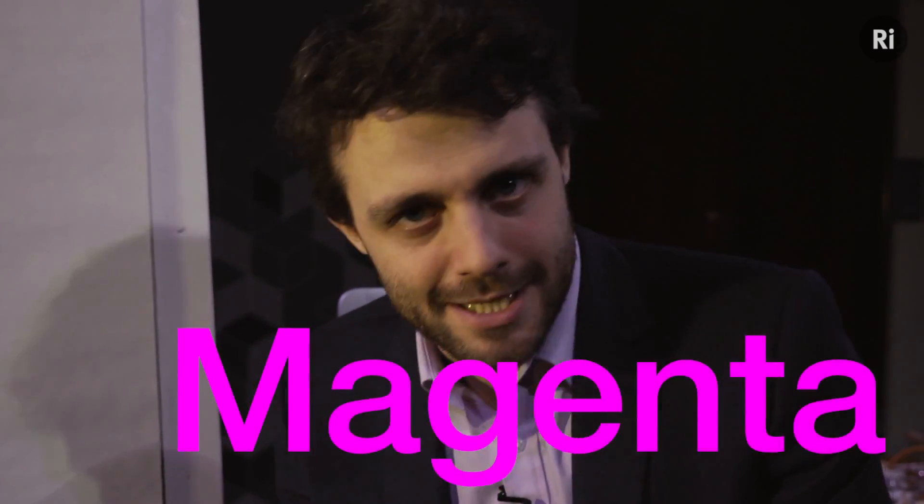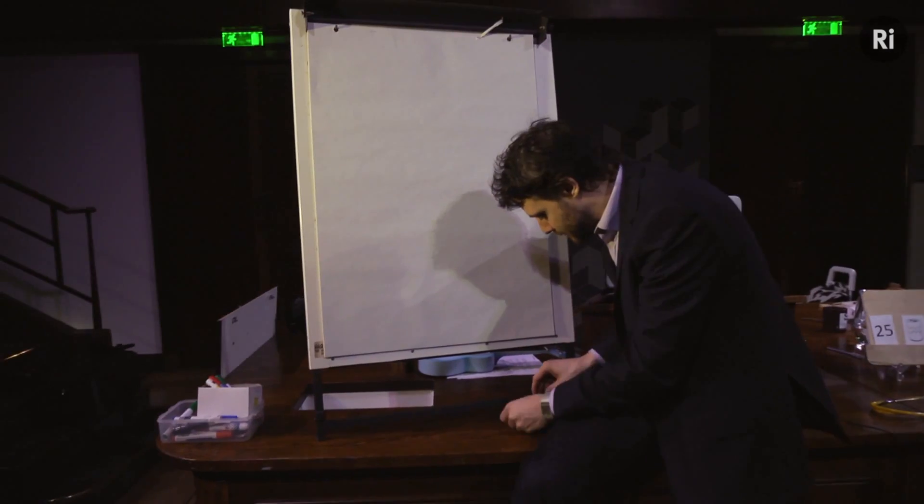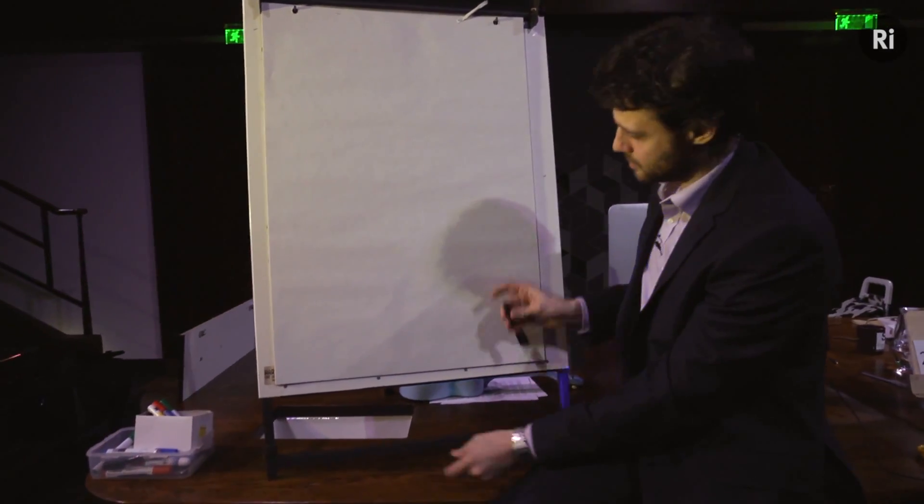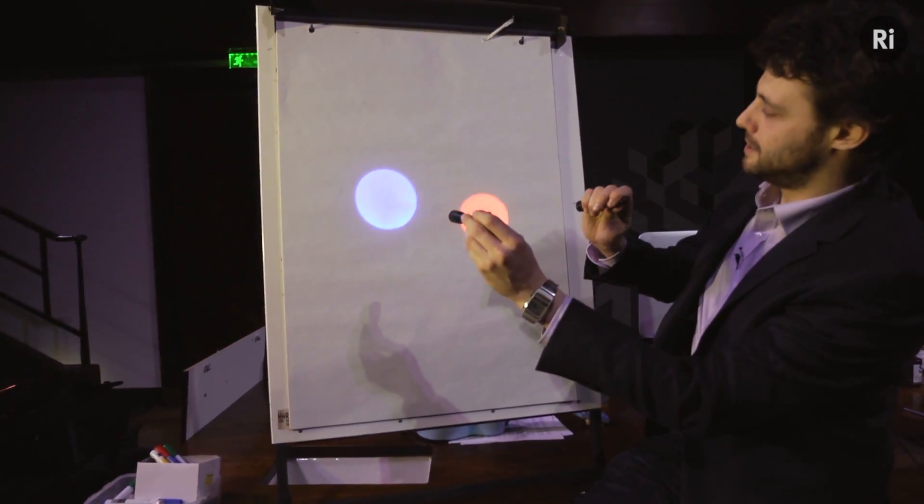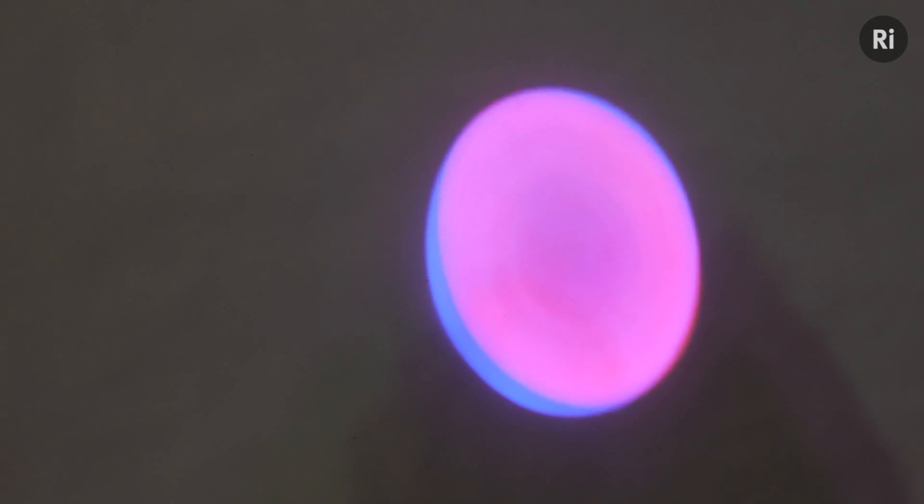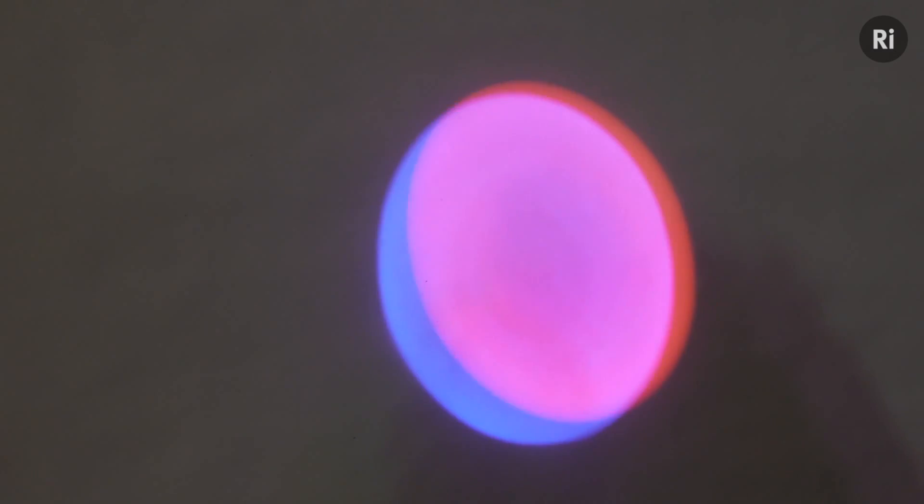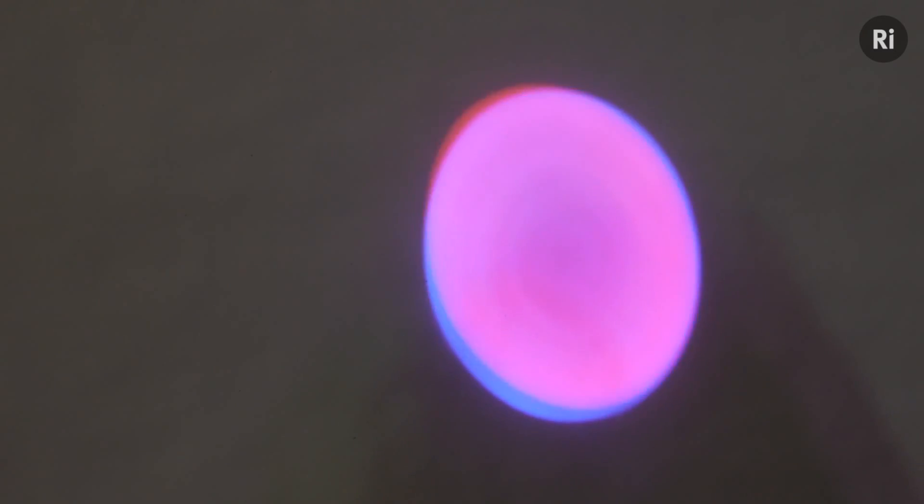And I can show you that with my red and blue torches. When they combine together, there you see magenta. Absolutely beautiful. And that's why you don't see magenta in the spectrum. You don't see magenta in the rainbow because it doesn't have a wavelength. It's just the absence of green, if you like.